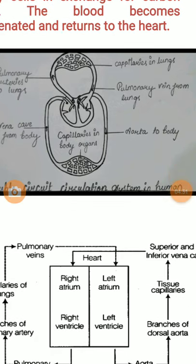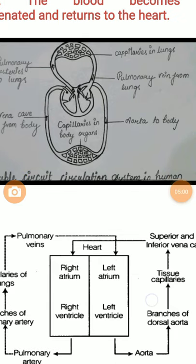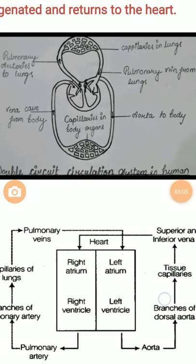The blood that has come to the left auricle passes into the left ventricle, which pumps it through the aorta to the whole body and all the organs. This oxygenated blood supplies the body, becomes deoxygenated, and returns to the right auricle. The pathway from the left ventricle to the right auricle is known as systemic circulation — meaning circulation between the heart and the body.